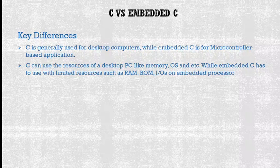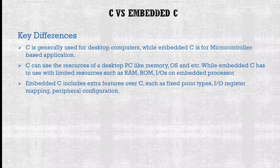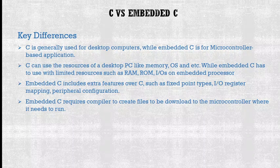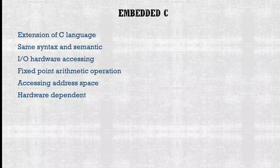Embedded C uses resources such as RAM, ROM, input/output, and is dependent on the embedded processor peripherals. Embedded C includes extra features such as fixed point types, IO register mapping, and peripheral configuration. Also, embedded C requires a compiler to create files to be downloaded to the microcontroller where it needs to run.